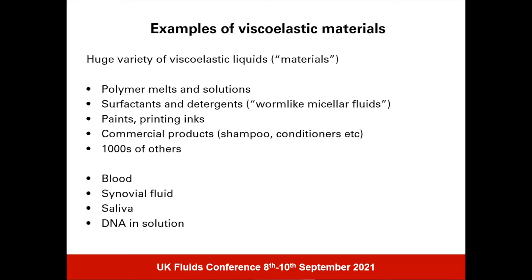When you add structure into a material it tends to take it away from being Newtonian. If you put a polymer into solution it becomes viscoelastic. Small surfactant molecules at low concentration reduce surface tension, but at higher concentration they form micelles, and further still they form longer worm-like micellar fluids that behave like polymers. Shampoo, conditioners, paints, and printing inks are examples. In our own bodies, blood, synovial fluid, saliva, and DNA in solution are all viscoelastic.